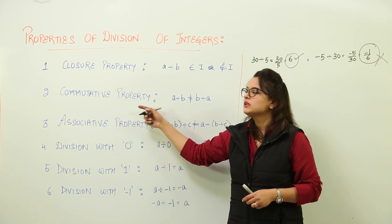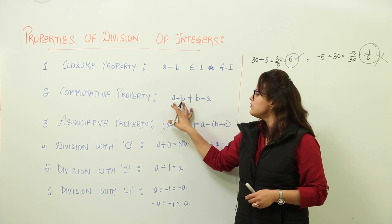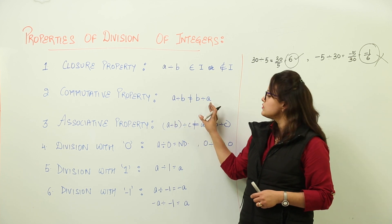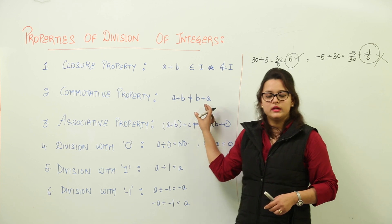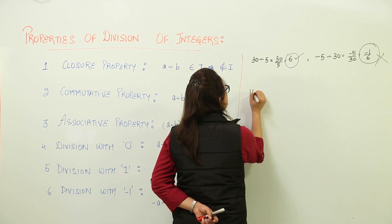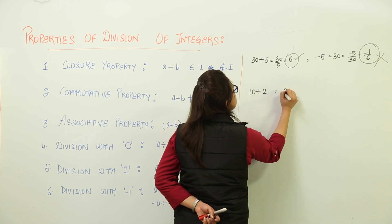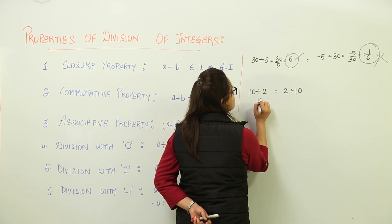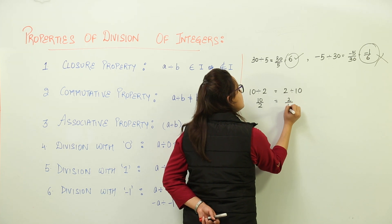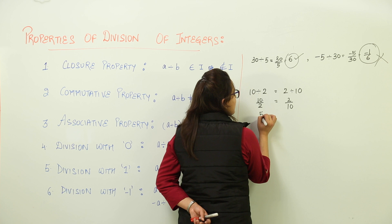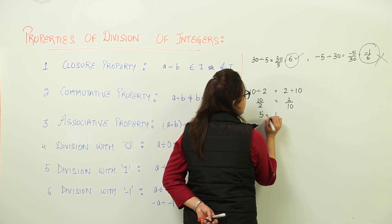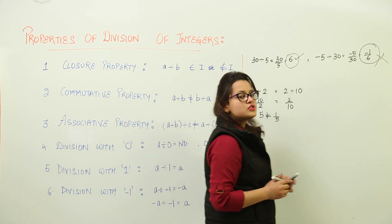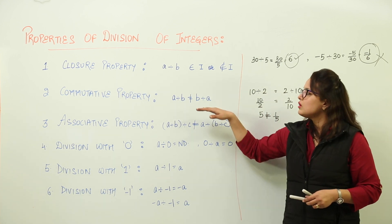The next is the commutative property. In the commutative property, the division order matters. If you divide the first integer by the second, it will not equal the division of the second by the first. For example, 10 divided by 2 equals 5, whereas 2 divided by 10 equals 1 by 5, which are not equal. So division of integers is non-commutative.